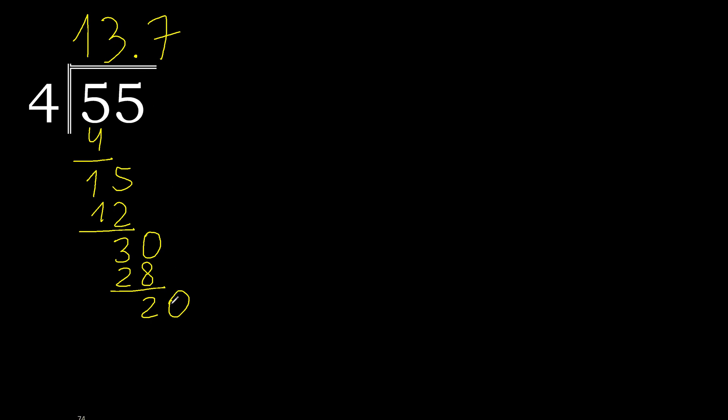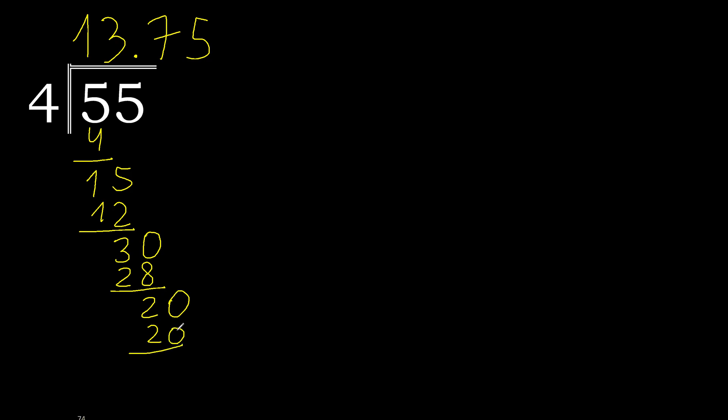The decimal point is here. Bring down: 20. 4 multiplied by 5 is 20. Subtract: 20 minus 20 is 0. Remainder is 0, therefore finish.